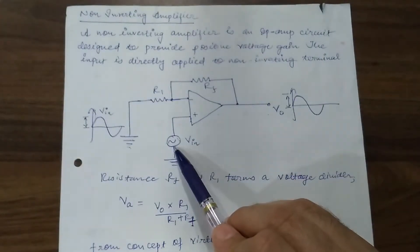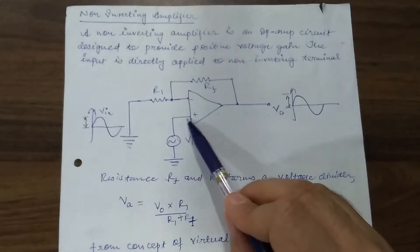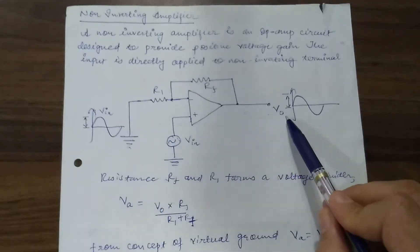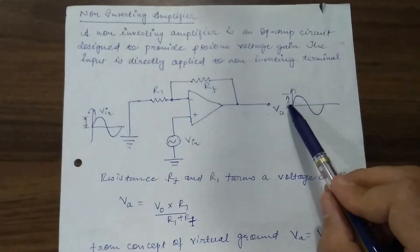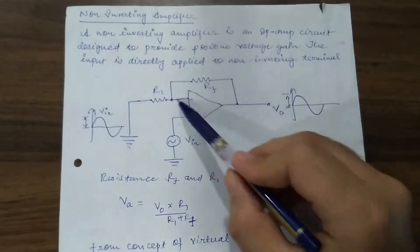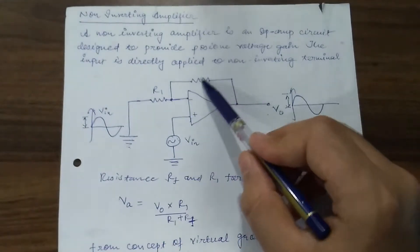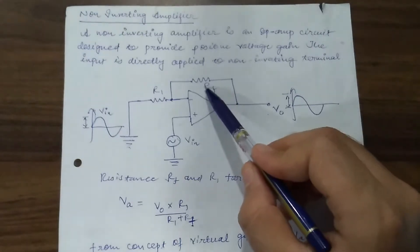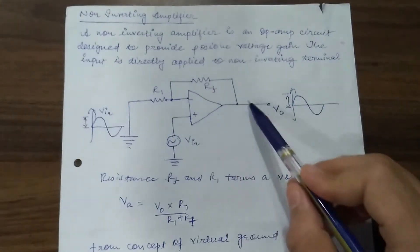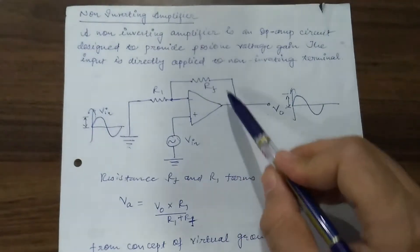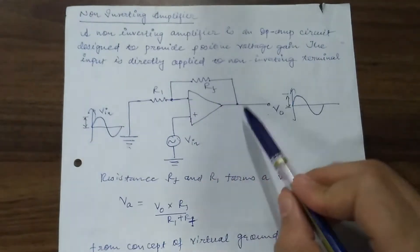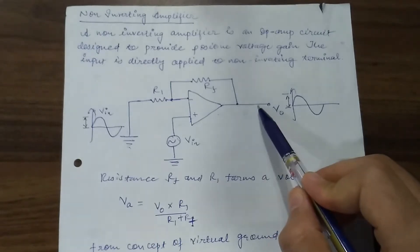The input is directly applied to the non-inverting terminal only, and it will provide an amplified output voltage. Here you can see that one resistance R1 and one feedback resistance RF is applied. This feedback resistance is also called the negative feedback resistance, and what it does is provide feedback to the input circuit about what kind of output is present at the output terminals.